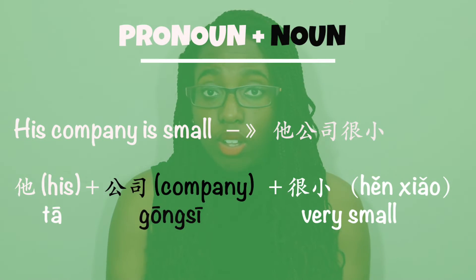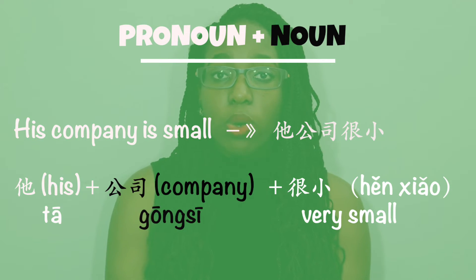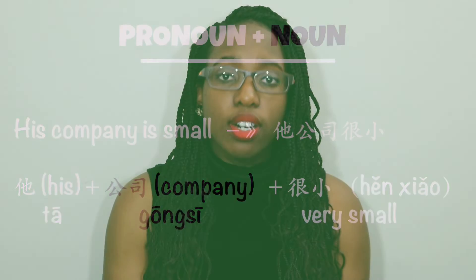The second case is an organizational relationship — for example, a relationship with your school or your workplace. For example, 'this company is small' — 他公司很少.